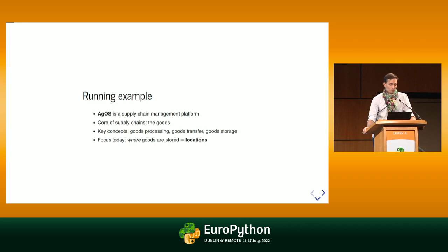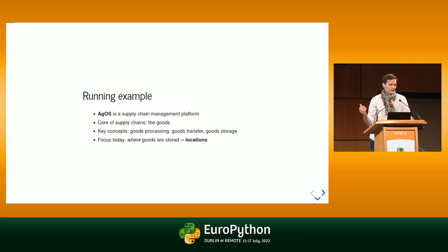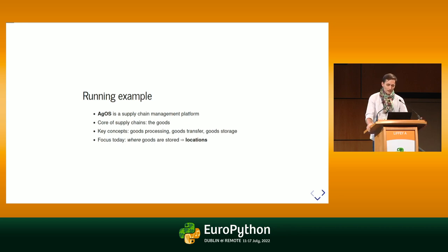I'm working for Agos, which is a Dutch company operating in the agricultural and financial tech sector, where we are developing a supply chain management platform. Without going into too much detail, I will use this experience as context to run my examples through this talk. The heart of supply chains is the goods and how they are processed by chain participants and how they move from one chain participant to the next. A supply chain management platform tracks the goods as they move through the chain. When they are not in movement, the goods are stored somewhere — they have a location — and that's the concept I will use to illustrate race conditions.